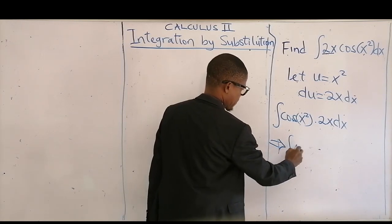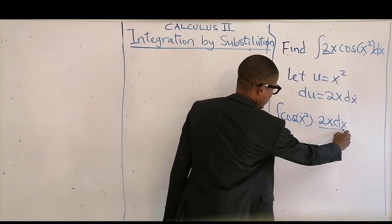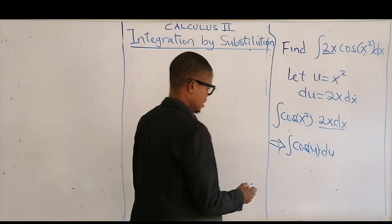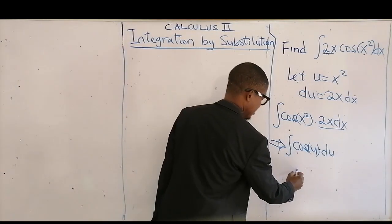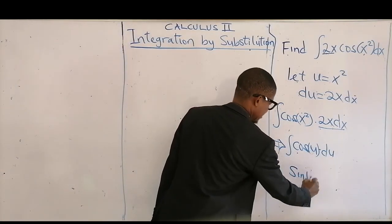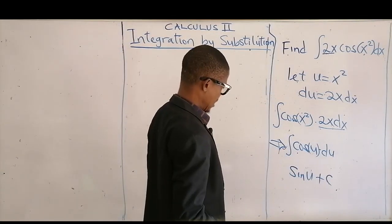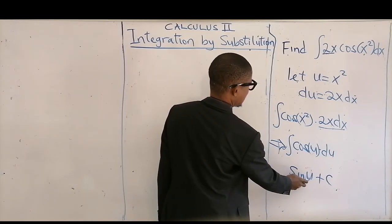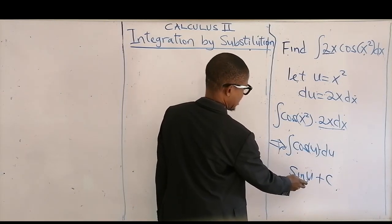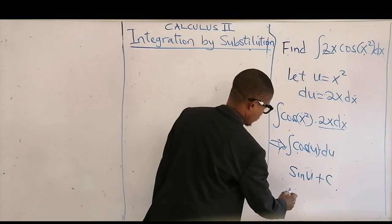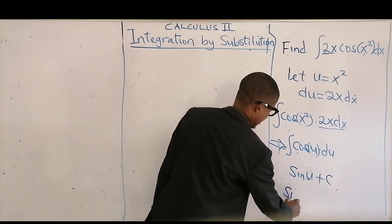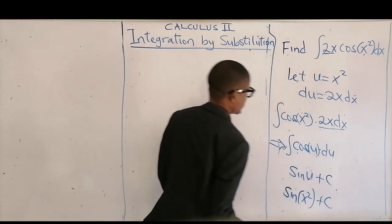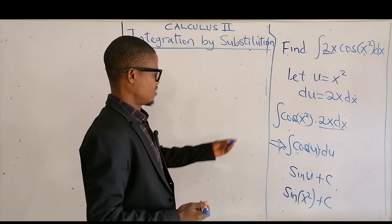Then we now have the integral of cos(u) du. The integral of cos(u) is sin(u). Then the next thing to do is to substitute back your u, which gives us sin(x²), plus c. So that's the result for this example.